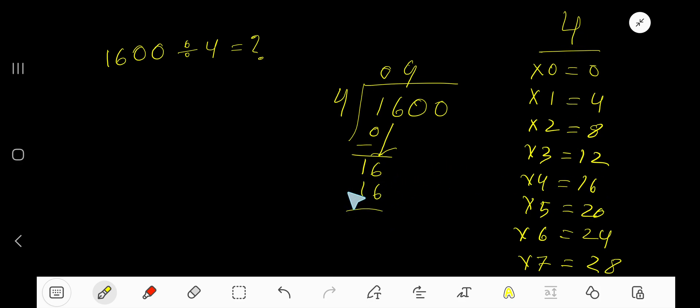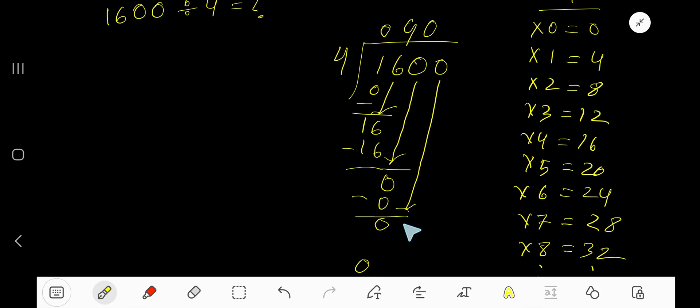Now 0. 4 goes into 0 how many times? 0 times. 0 times 4 is 0. Subtract 0, bring down this 0. Now 4 goes into 0 how many times? 0 times. 0 times 4 is 0. Subtract 0.